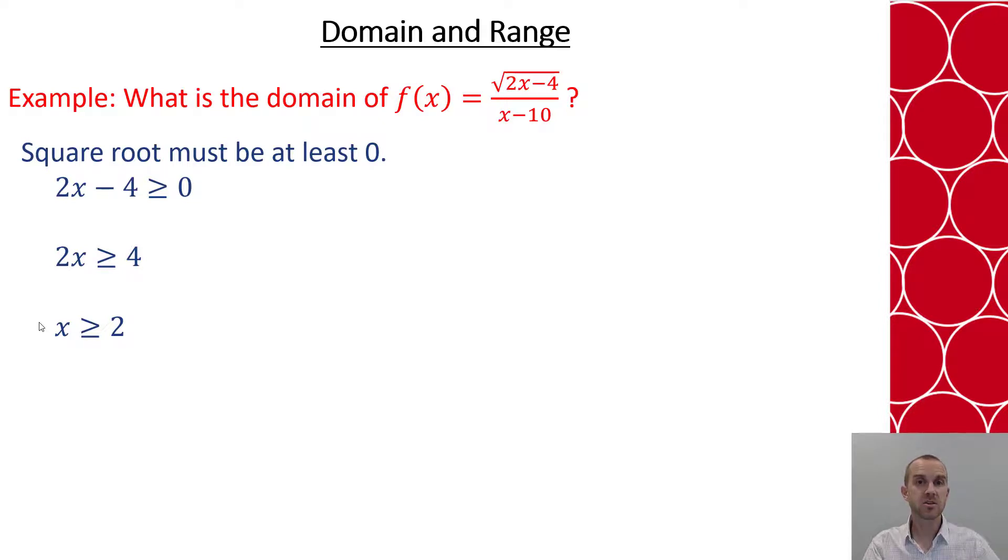Then I look and say, is there a denominator? Well, yes, there is. That denominator cannot equal zero. So I'm going to take x - 10 and set it so it's not equal to zero. I add 10 to both sides. So that means also, not only does it have to be greater than or equal to 2, it cannot equal 10.